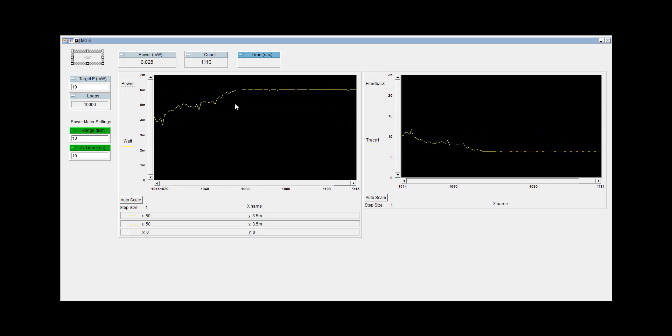and you can see the algorithm very quickly readjusts the polarization controller to get aligned to the polarizer again. We'll move it again. You see the power drop, but very quickly recover, meaning we very quickly realigned the polarization to the polarizer, to the correct state.